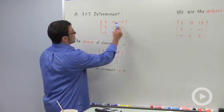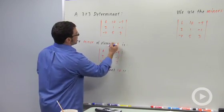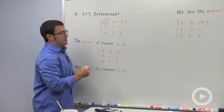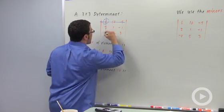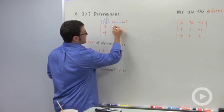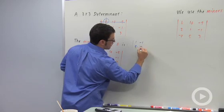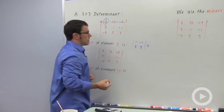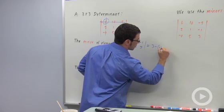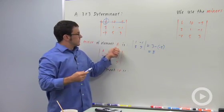So when we look at this determinant, all of these numbers are called elements of the determinant. The minor of element 6, this element, is the determinant that we get when we cross out the row and the column that 6 is sitting in. So the resulting determinant is 1, negative 1, 5, 3. And that determinant is 3 minus negative 5, which is 8. So the minor of element 6 is 8.